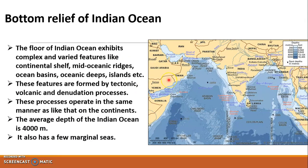Now we will study the bottom and relief of the Indian Ocean. The floor of the Indian Ocean exhibits complex and varied features like continental shelf, mid-oceanic ridge, ocean basins, ocean deeps, and islands. As we know, the ocean floor consists of continental shelf, continental slope, mid-oceanic ridges, abyssal plains, deeps, trenches, and islands — all of which are also found inside the Indian Ocean.